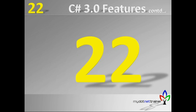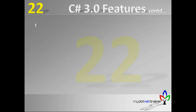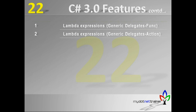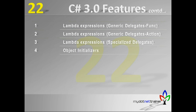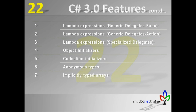We are in session 22, and in this session we will continue with 3.0 features which includes lambda expressions with a generic delegate called Func, and we'll continue with lambda expressions with generic delegates called Action. We'll see what they are and how we can use them, along with specialized delegates, object initializers, collection initializers, anonymous types, implicitly typed arrays, query expressions related to LINQ, and expression trees.